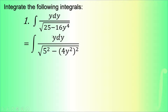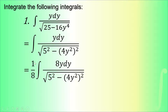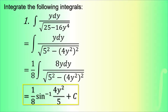We are lacking 8 on the numerator, so we multiply the integral by 1/8 and add 8 on the numerator so we can proceed with the arcsin formula. The result is (1/8) arcsin(4y²/5) + C. This is our answer for the first example.